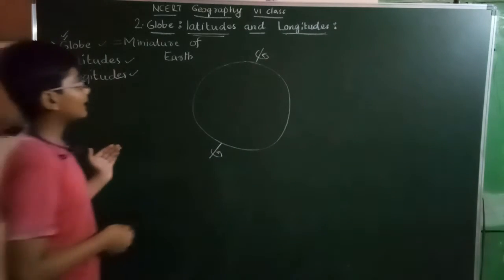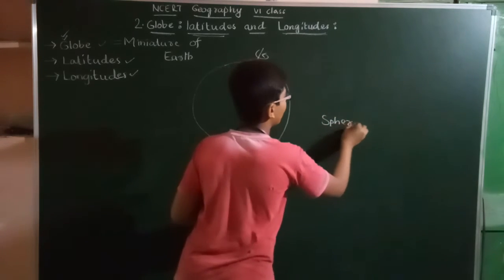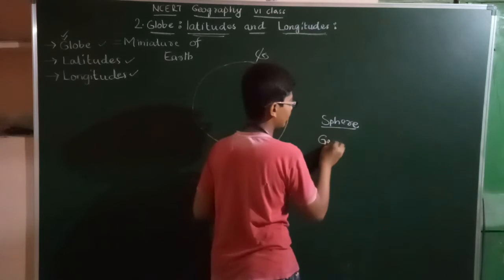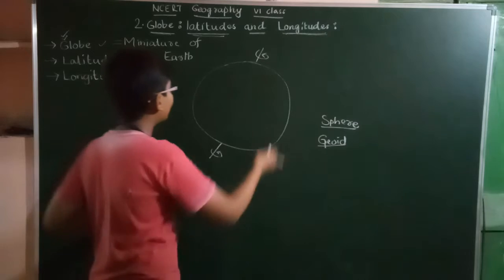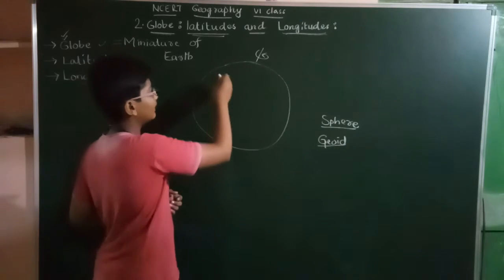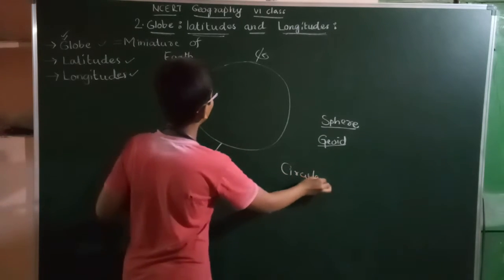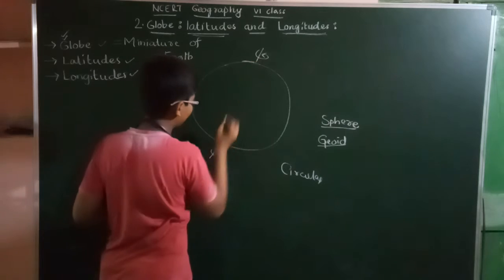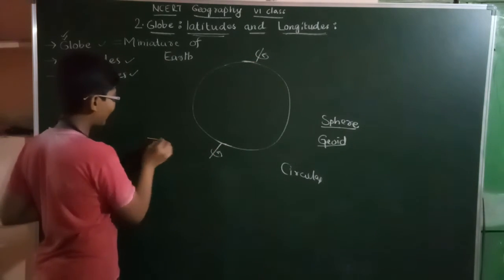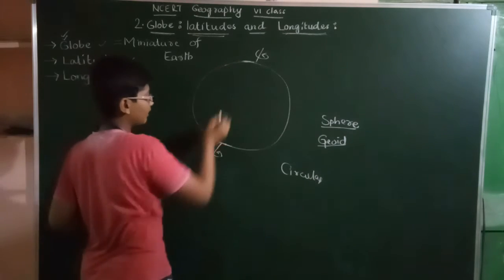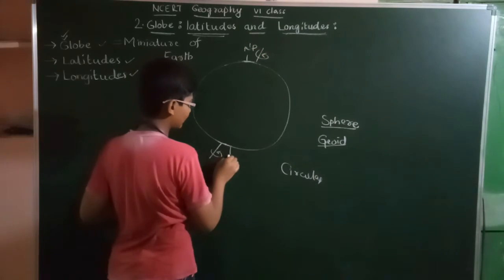Globe is not exactly the shape of a sphere. We call its shape as Geoid. The shape of Earth is also Geoid. Now, Geoid means it will be in a circular shape, but here at the poles there is some flatness. There will be flatness at the poles. This upper end is called the North Pole and this is called the South Pole.